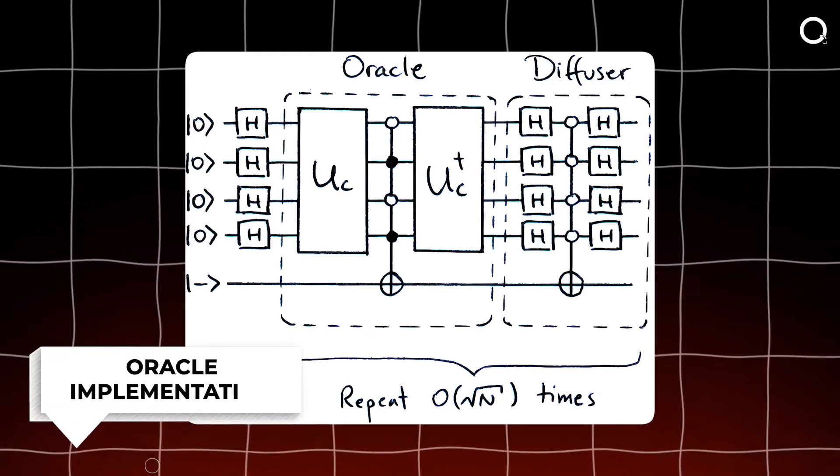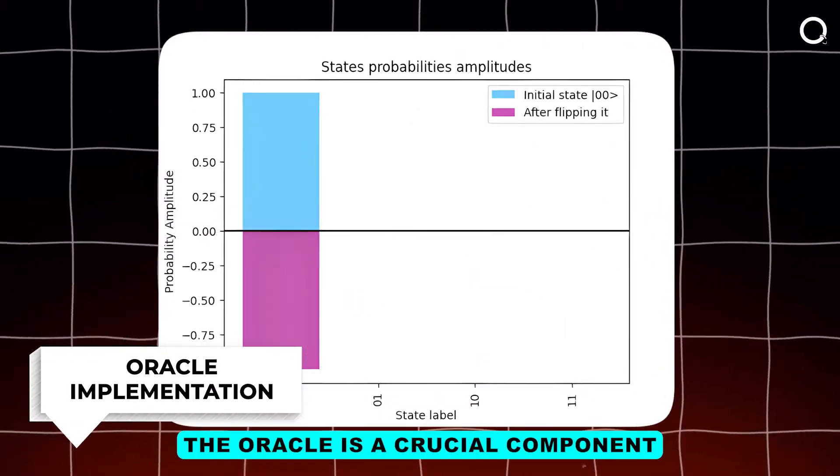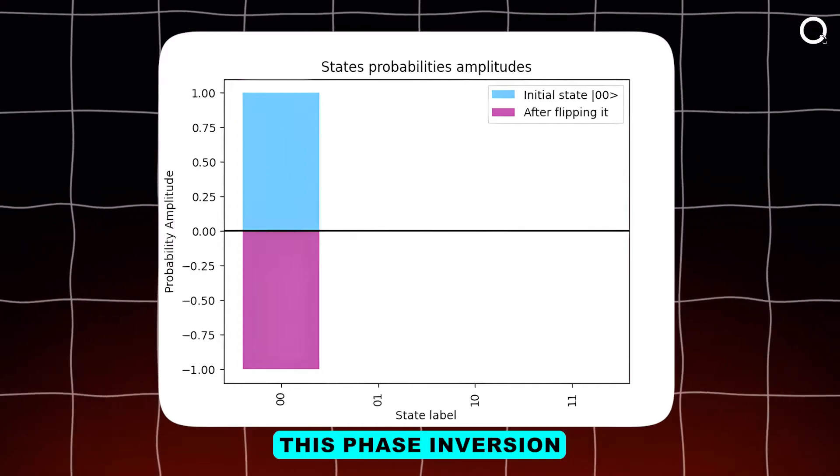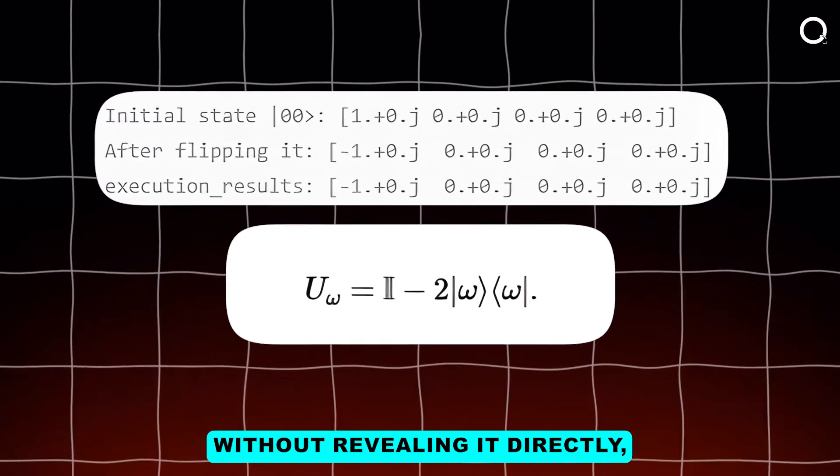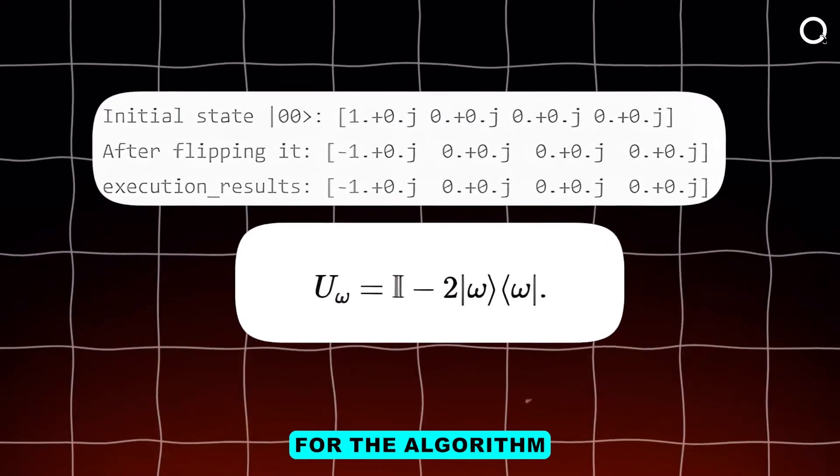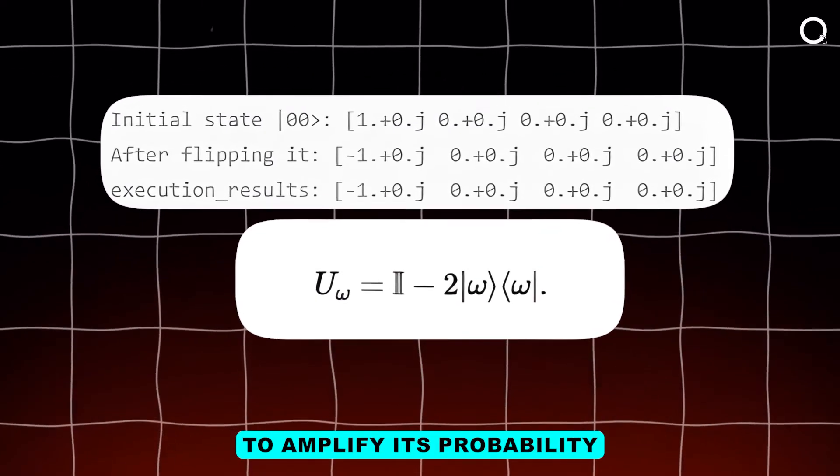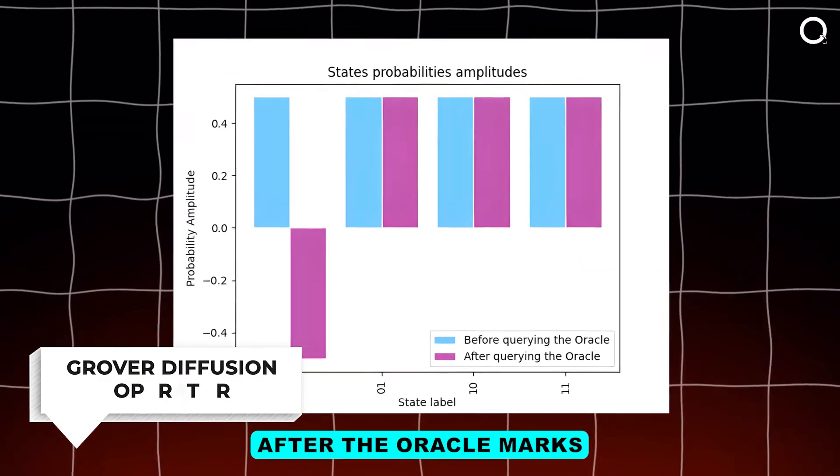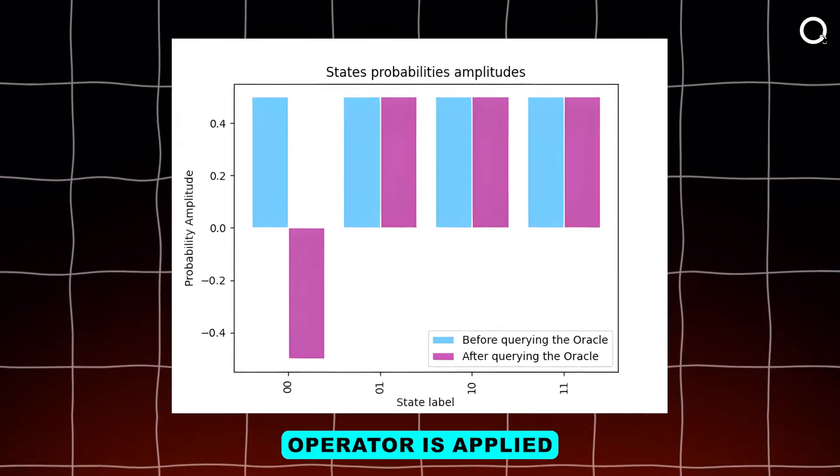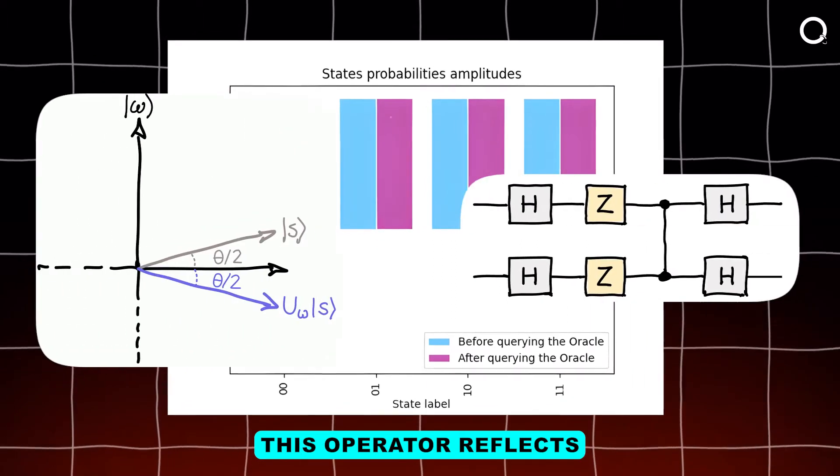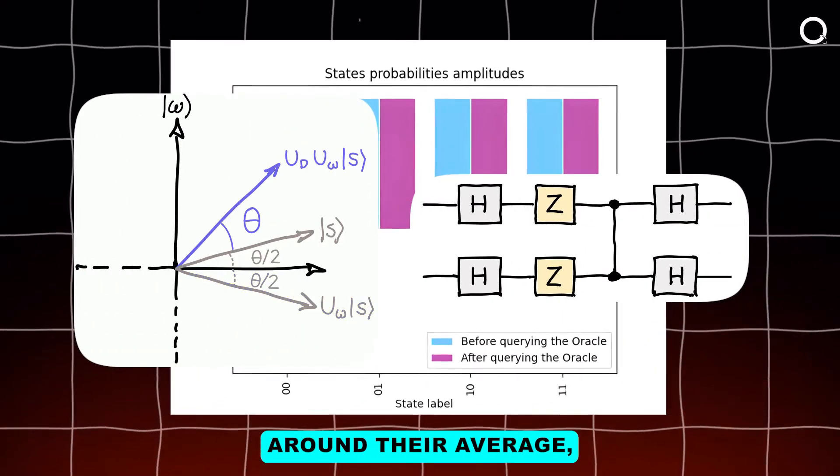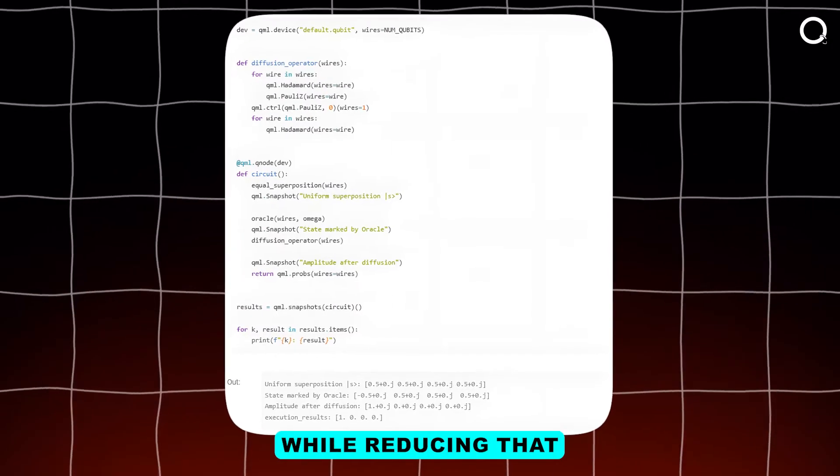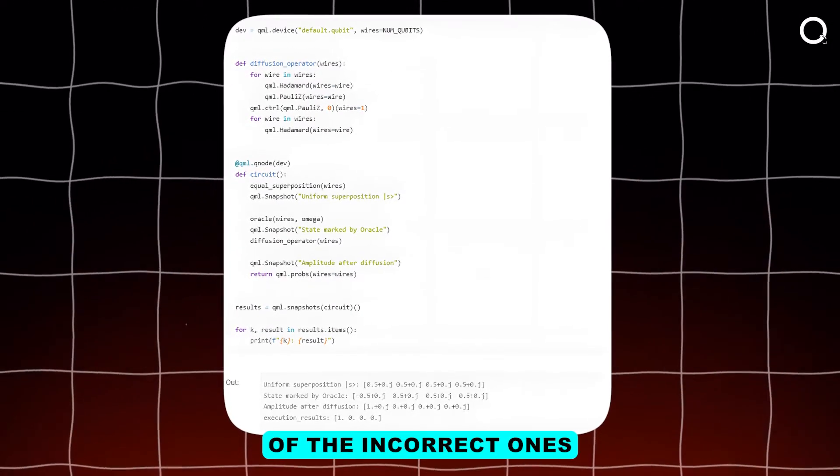Number two: oracle implementation. The oracle is a crucial component that identifies the correct state by flipping its amplitude's phase. This phase inversion marks the target state without revealing it directly, setting the stage for the algorithm to amplify its probability. Number three: Grover diffusion operator. After the oracle marks the target state, the diffusion operator is applied. This operator reflects all state amplitudes around their average, effectively amplifying the probability of the correct state while reducing that of the incorrect ones.